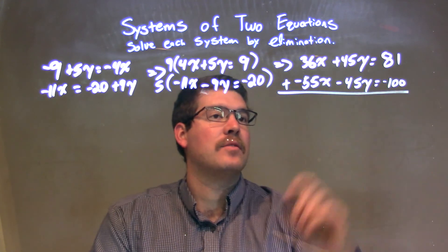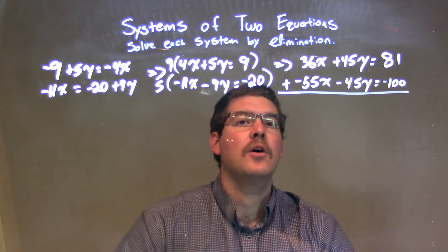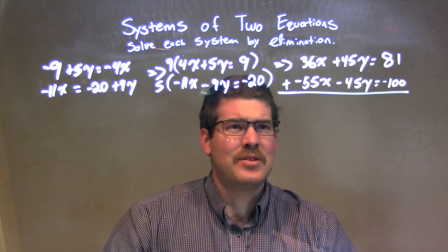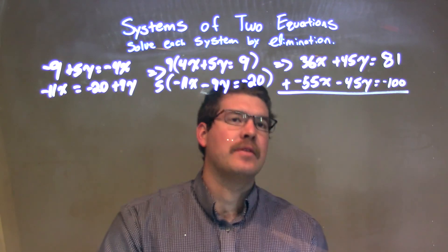So, now I'm going to add these two equations together. Hopefully, we should eliminate the y variable. Adding the x's together, 36 minus 55,